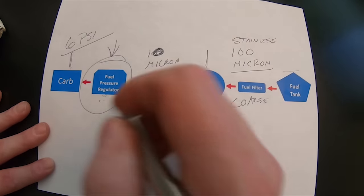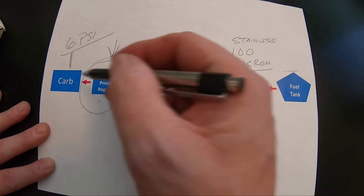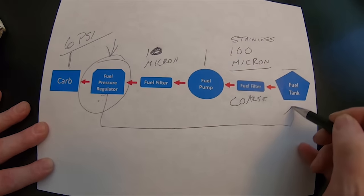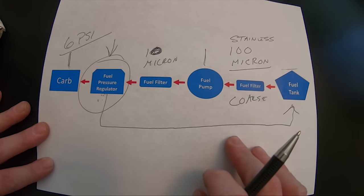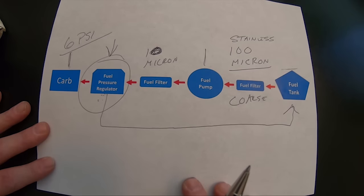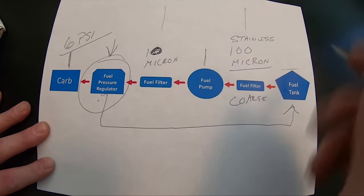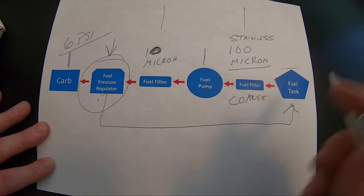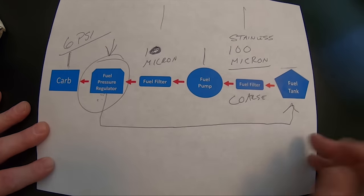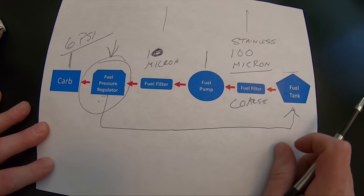Now on a pressure regulator, you can run a deadhead style, which means it has no return line. If you want, you can run one that has a return line back to the tank. That's fine. But having that regulator within the system is good. Maintaining these fuel filters is a big deal. Before you put a new carburetor on there, make sure you change those fuel filters. And then obviously it's part of your regular maintenance from there.